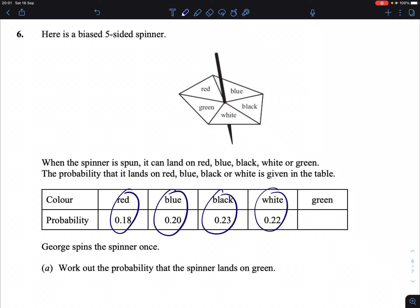The probability that it lands on any of these has been given in the table below. So red, blue, black, and white. We know the chances or the probability of each of those colors occurring. We do not, however, have green, and that's what the first question asks.